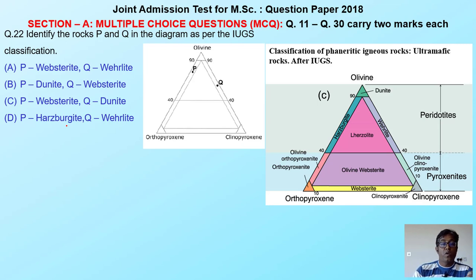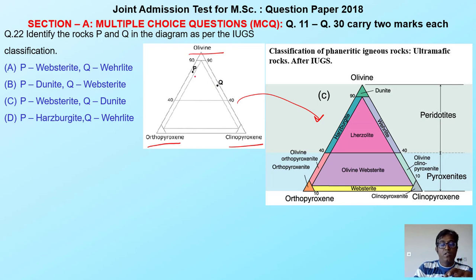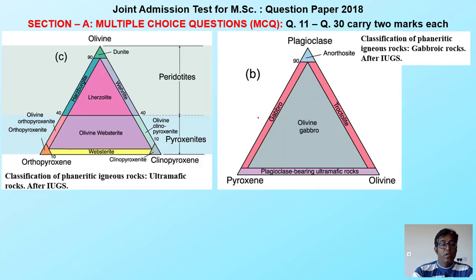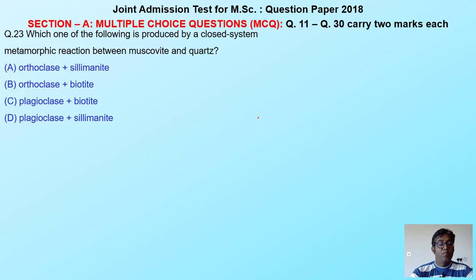Moving to the next question — this is IUGS classification where you have to identify what type of mineral is in this triangle portion. With olivine, orthopyroxene, and clinopyroxene, if you correlate with the existing IUGS classification, you can easily identify that P is related to harzburgite and Q is related to wehrlite. So option D is the right answer. These are classical examples where you identify rock names based on the APF classification, QAP classification, related to volcanic, plutonic, or ultramafic rocks. Go one triangle at a time to identify which portion gives which rock type.